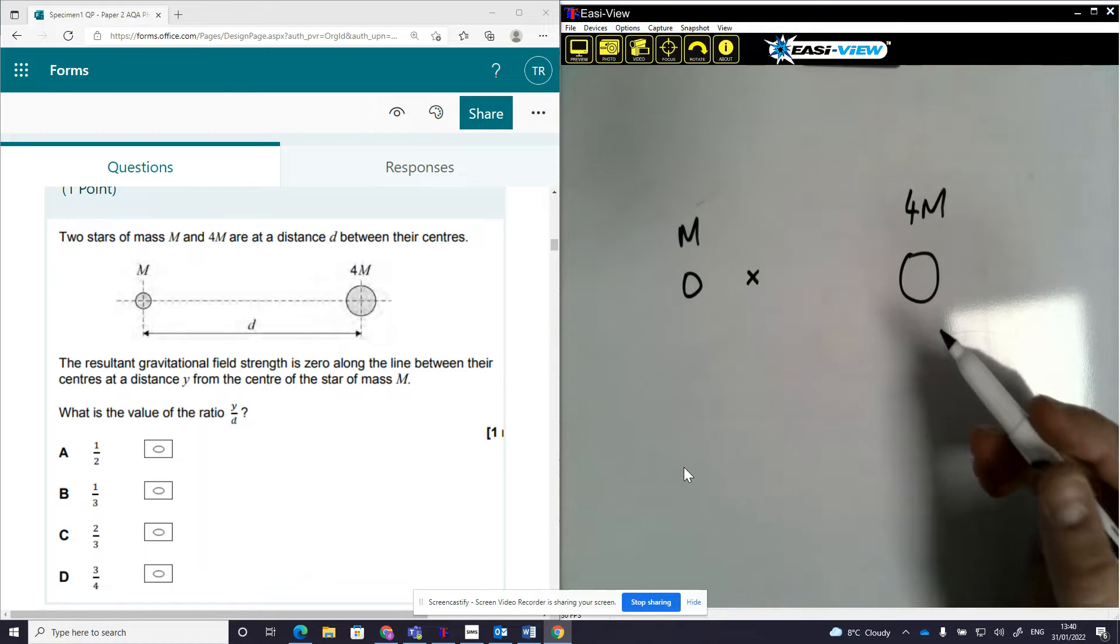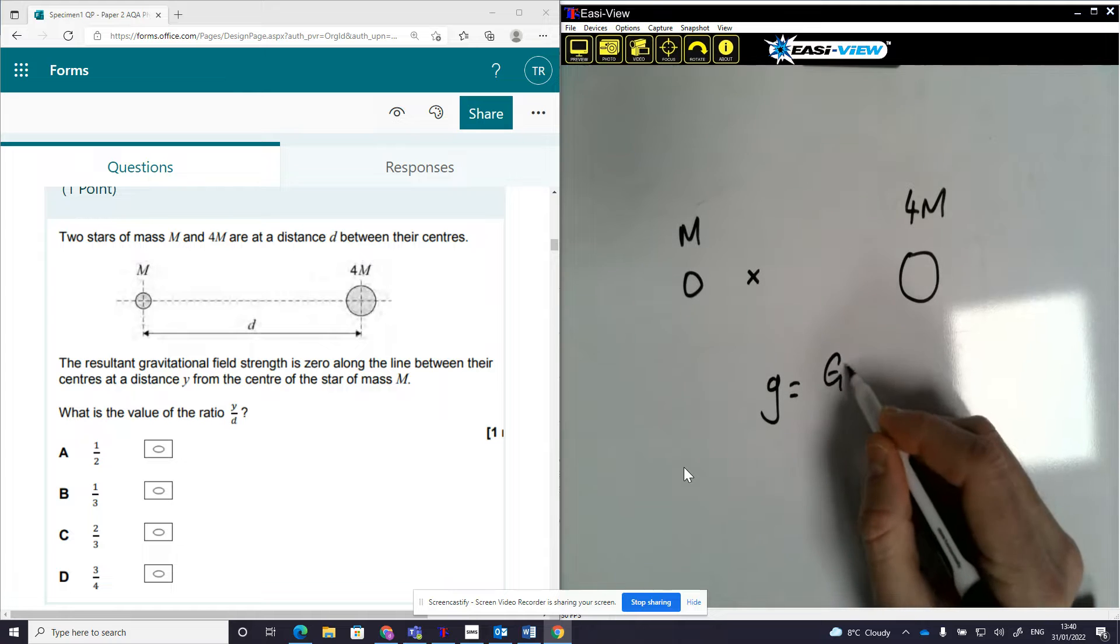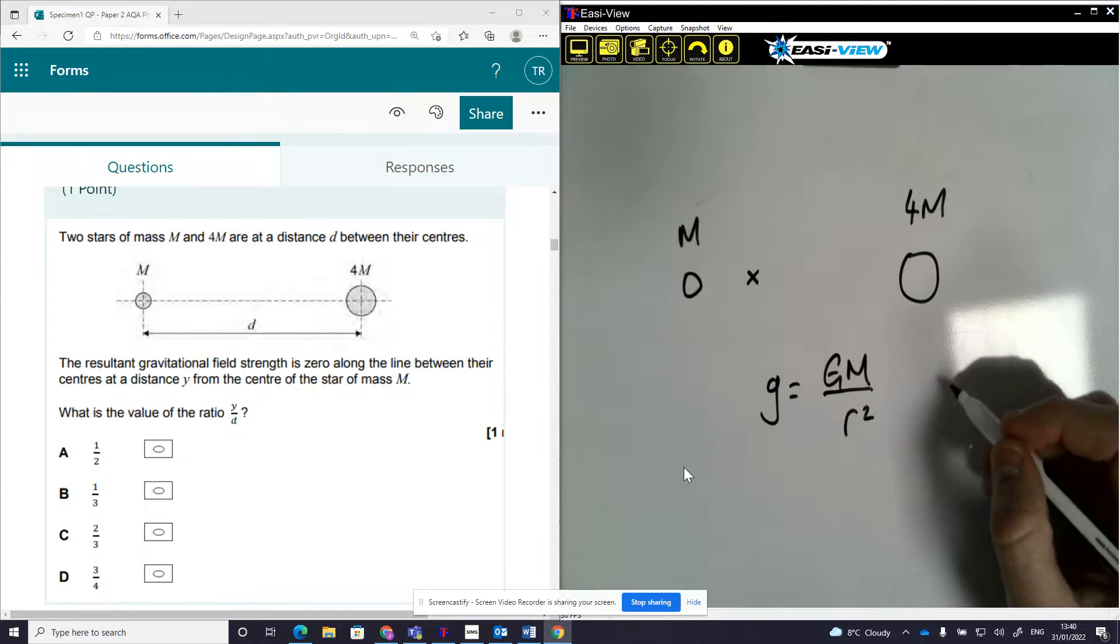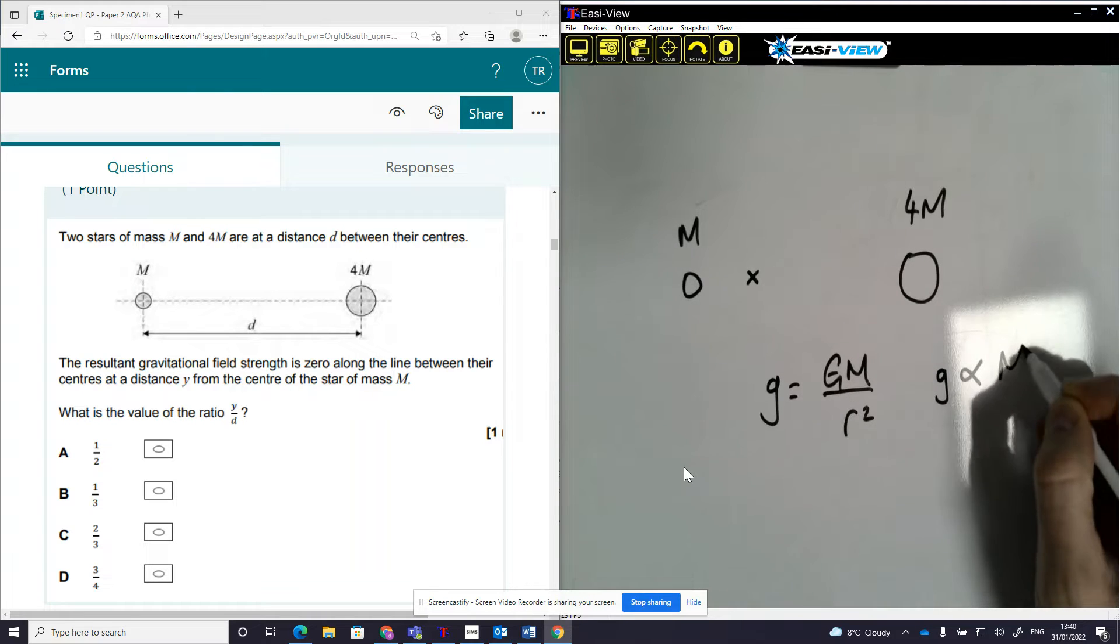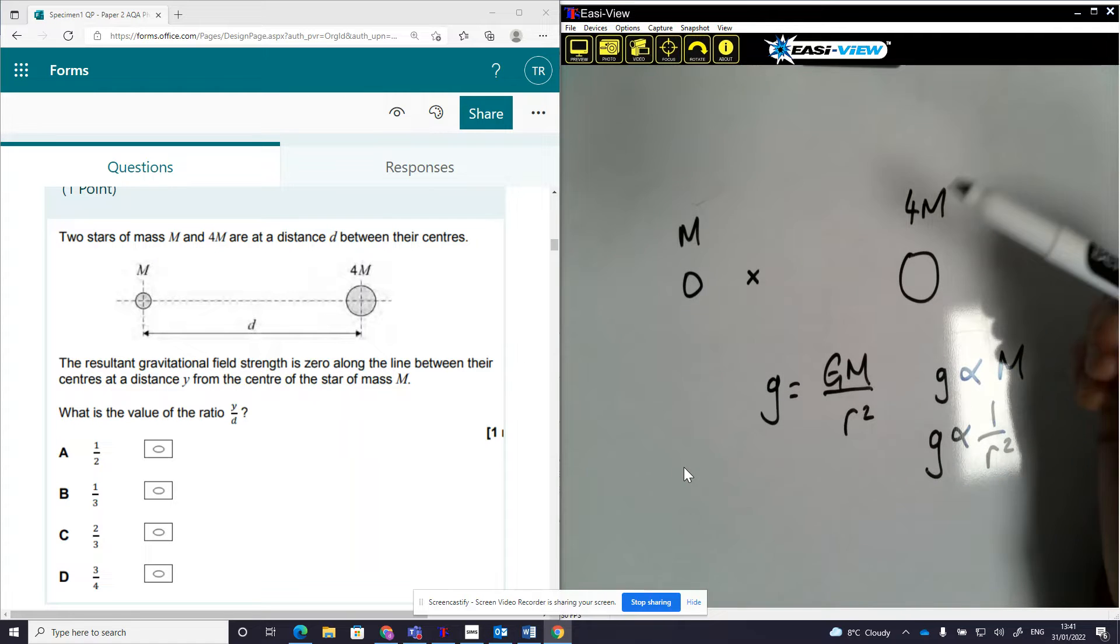We're asked about gravitational field strength. Gravitational field strength is given as g = GM over R squared. So gravitational field strength is proportional to mass and inversely proportional to 1 over R squared.